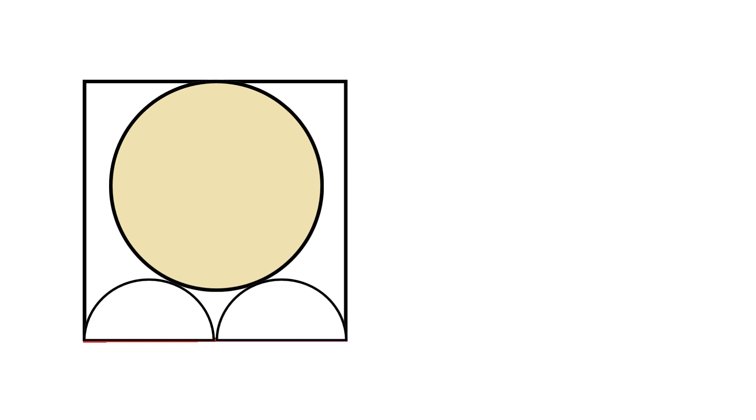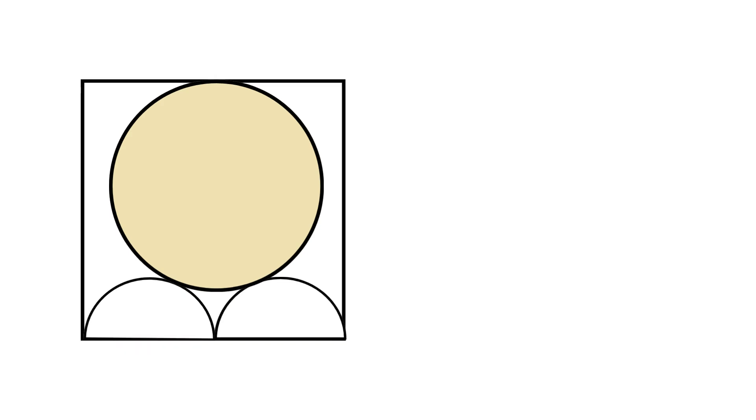First, we label the vertices of our square. Starting from the top left and moving clockwise, we name it A to the top left corner, B to the top right corner, C to the bottom right corner, and D to the bottom left corner. Next, let's mark the center of our large inscribed circle, and we call it point O.